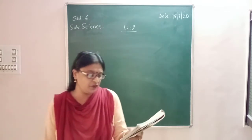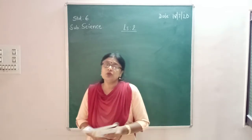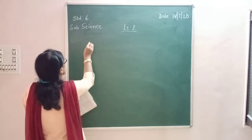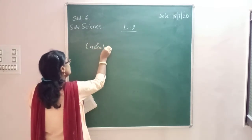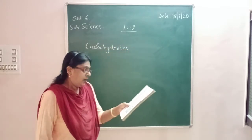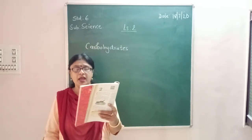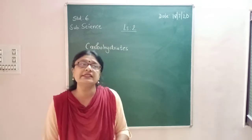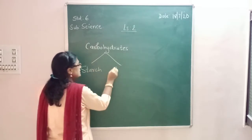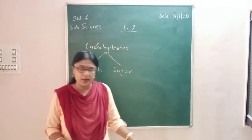Let us test the different food items to see if there is carbohydrate. There are many types of carbohydrates. The main carbohydrates found in our food are in the form of starch and sugars. These two are the major source of carbohydrates.